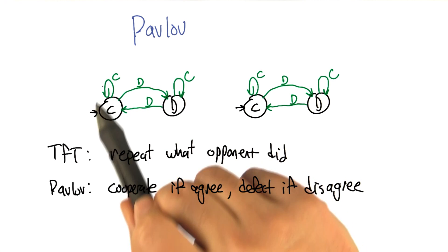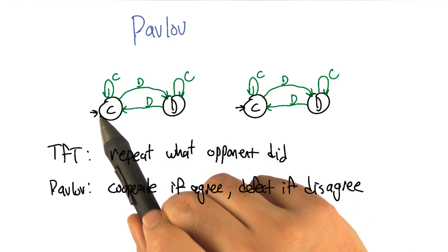It starts off cooperating, and as long as the opponent keeps cooperating, then cooperate. So far it sounds a lot like tit for tat.